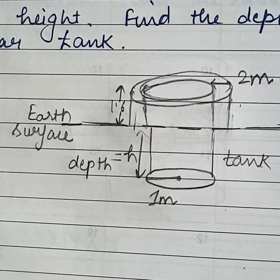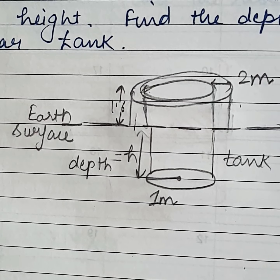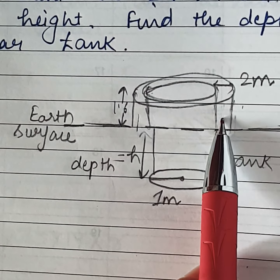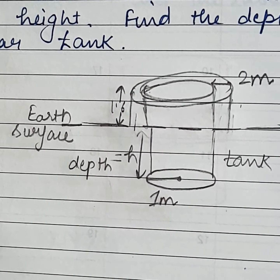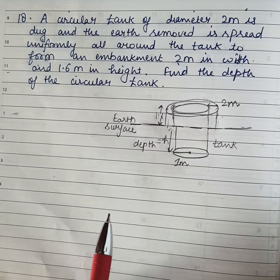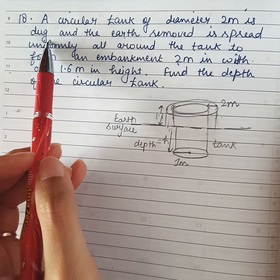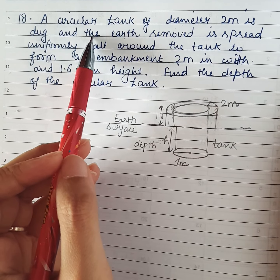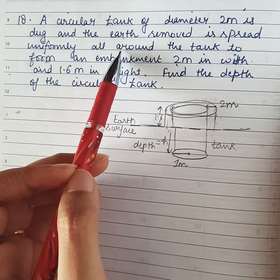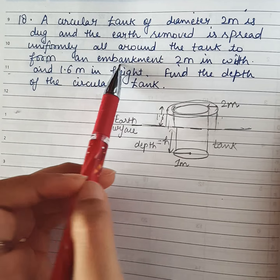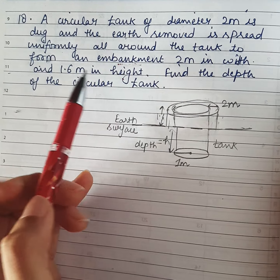A question from the topic surface area and volume of cylinder, class 10th — related to embankment. Let us first read the question. A circular tank of diameter 2 meter is dug. 'Dug' means khodna. And the earth removed is spread uniformly all around the tank to form an embankment 2 meter in width and 1.6 meter in height.